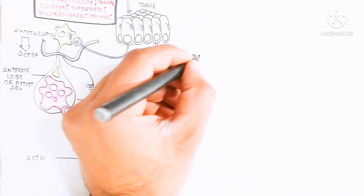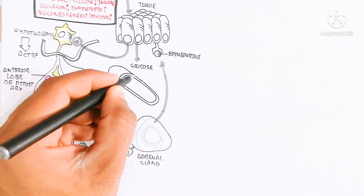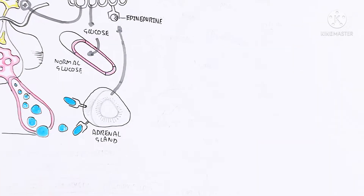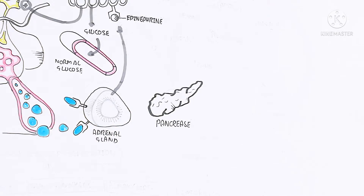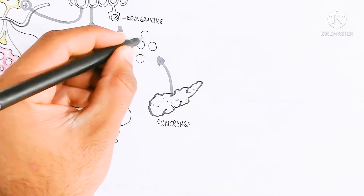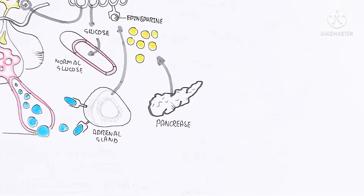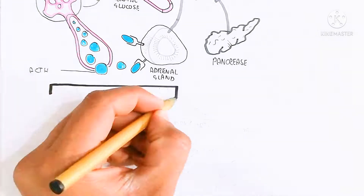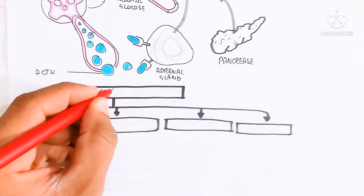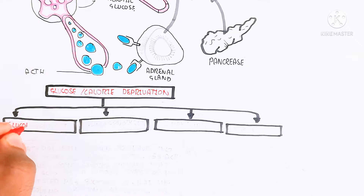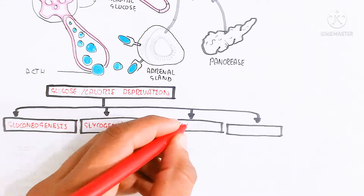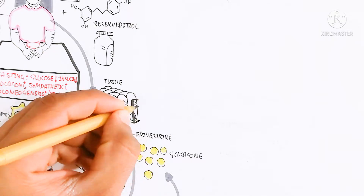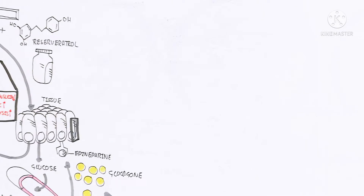Epinephrine binds with specific cell receptors to change their physiology, increasing glucose production. The pancreas also produces glucagon, which binds with different cells to increase glycogenolysis. In this way, calorie deprivation decreases glucose, which increases gluconeogenesis, glycogenolysis, the AMPK pathway, and the sirtuin pathway, while the mTOR pathway — mTORC1 and mTORC2 — will decrease.